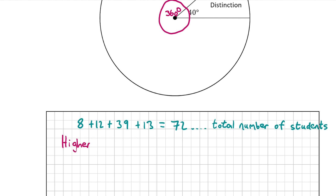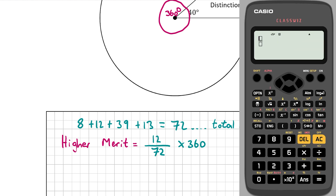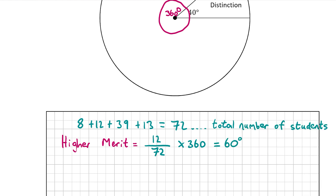Now we're going to start with the amount of people who got a higher merit. We're told that 12 people got a higher merit, so it's 12 over 72 multiplied by 360. That gives us 60, so the higher merit section in the pie chart should have 60 degrees of the circle.